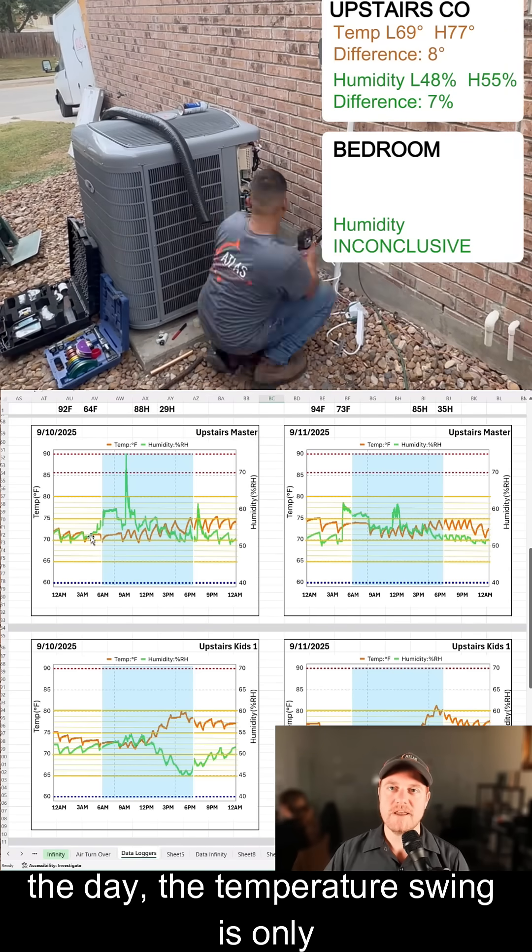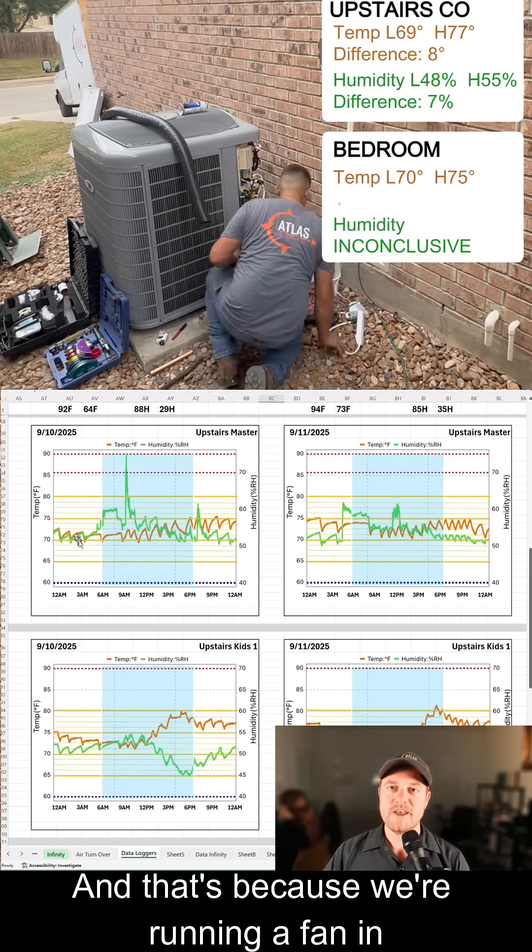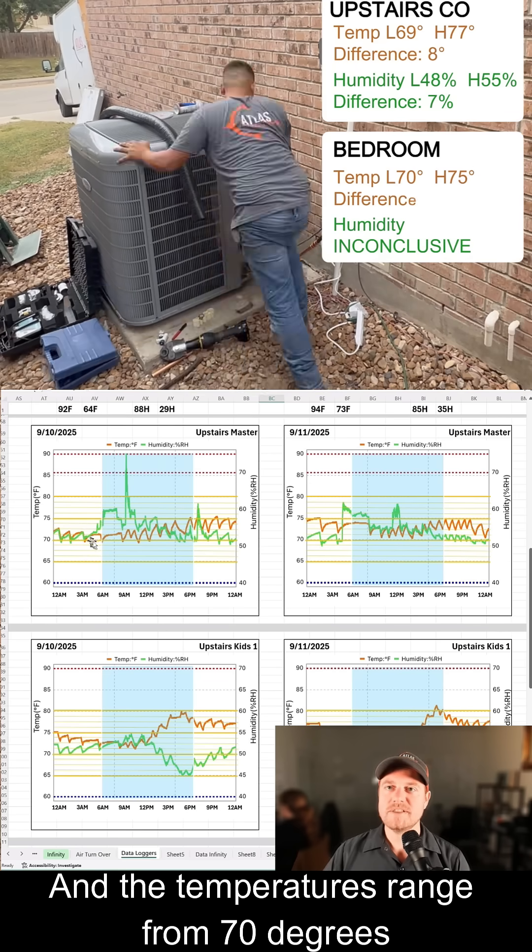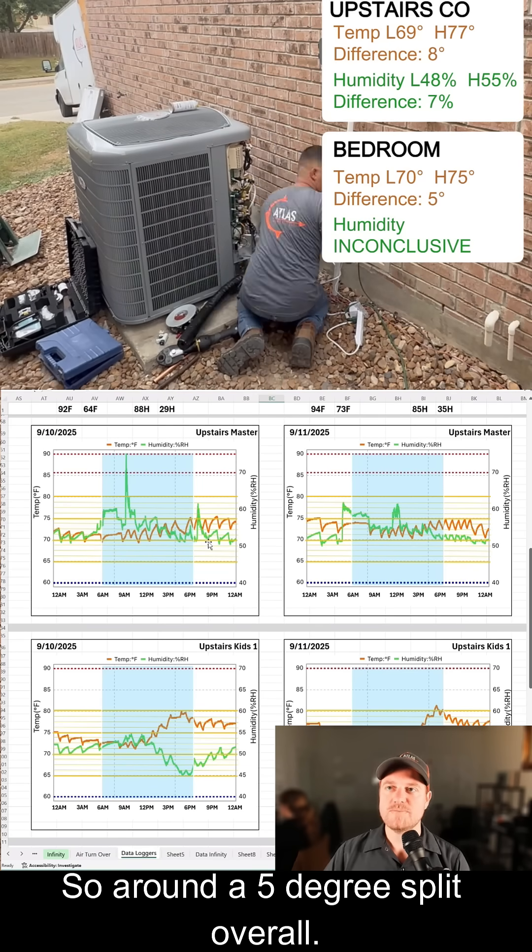And you can see at some points throughout the day the temperature swing is only around two degrees, and that's because we're running a fan in that room, and the temperatures range from 70 degrees all the way up to around 75 degrees, so around a five degree split overall.